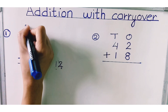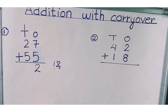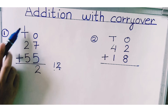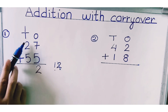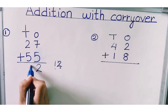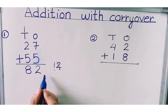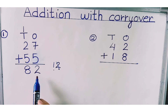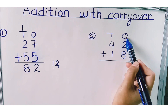This one we carry forward to the tens place. Now let's add the numbers in tens place. The numbers in tens place are one, two, and five. One plus two is three, and three plus five is eight. So 82 is the answer — 27 plus 55 is equals to 82.